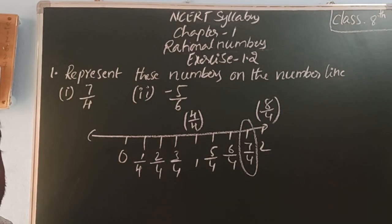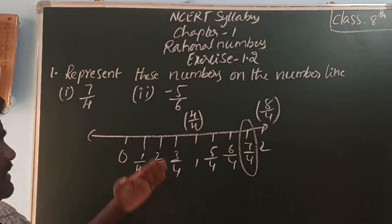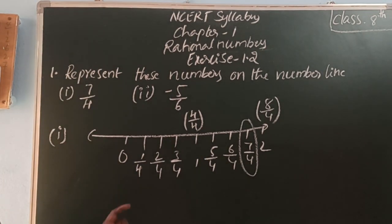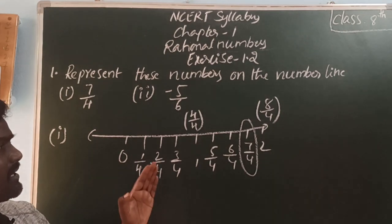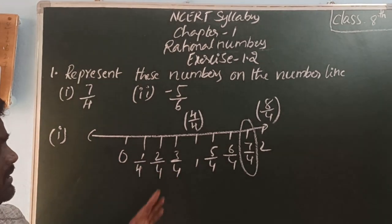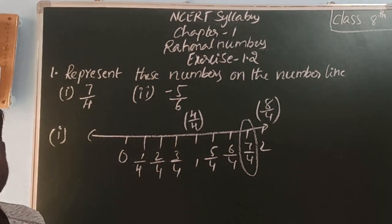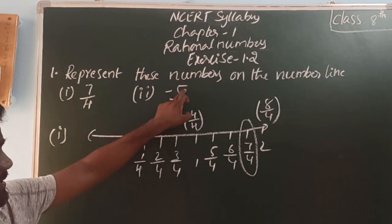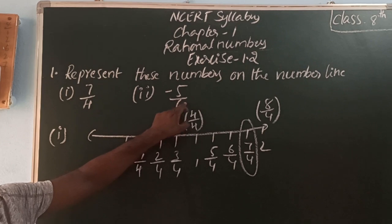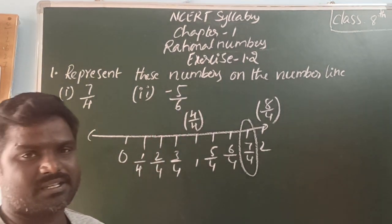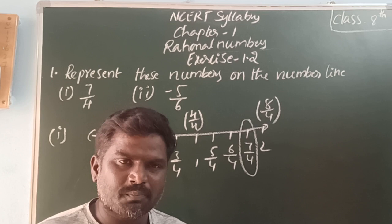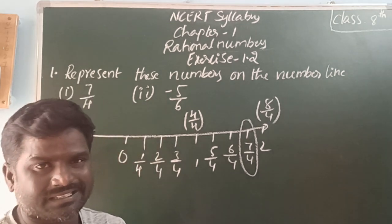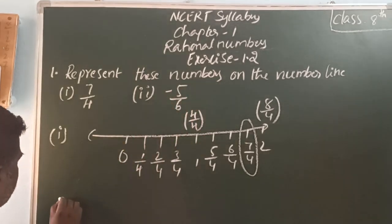Next, minus 5 by 6. Minus 5 by 6 is a negative rational number. Negative rational numbers are on the left side of 0. Here, 5 by 6 is a proper fraction — its value is less than 1 — because the numerator is smaller than the denominator. The denominator tells us into how many equal pieces a part is divided, and the numerator tells us how many pieces are selected.